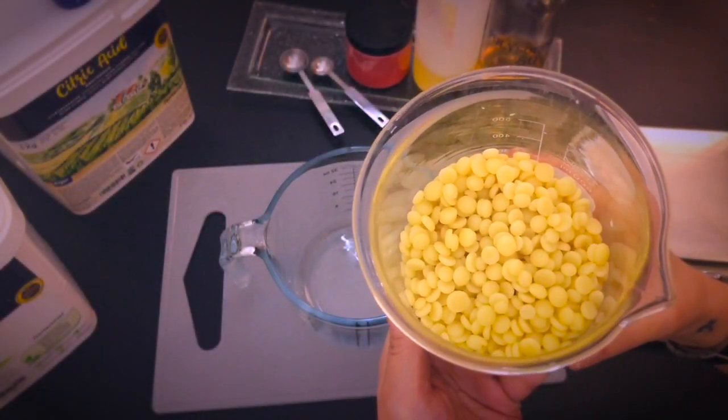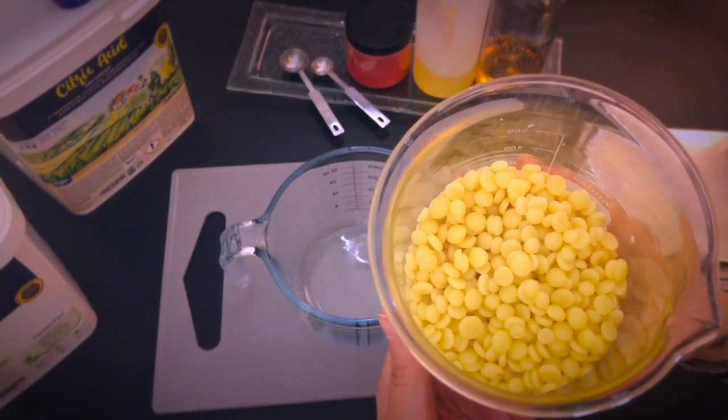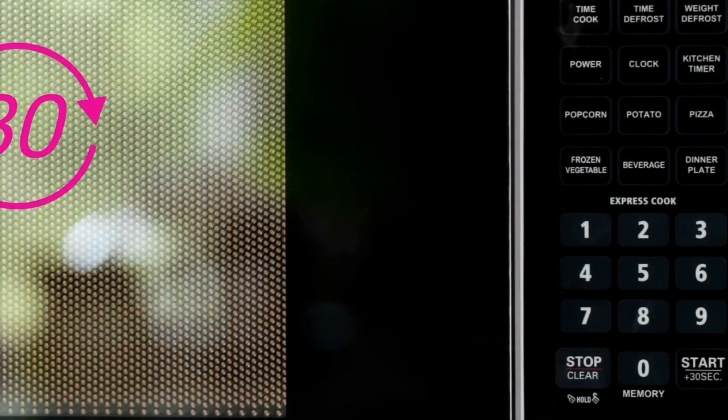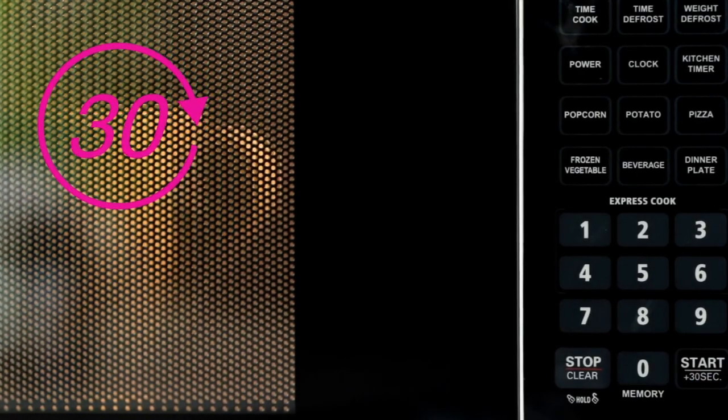I will transfer the cocoa butter to a double boiler. I just like this type of heating method because it is very gentle. But you could also use a microwave and if you do so, be sure to use short increments of 30 seconds so you don't overheat the mixture.